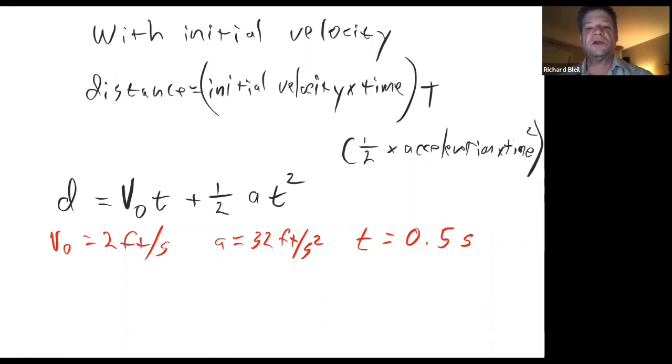So if we throw something down a well at initial velocity, we're actually going to pluck it so it has an initial velocity of two feet per second. And it only falls for 0.5 seconds, and it still falls at 32 feet per second per second.